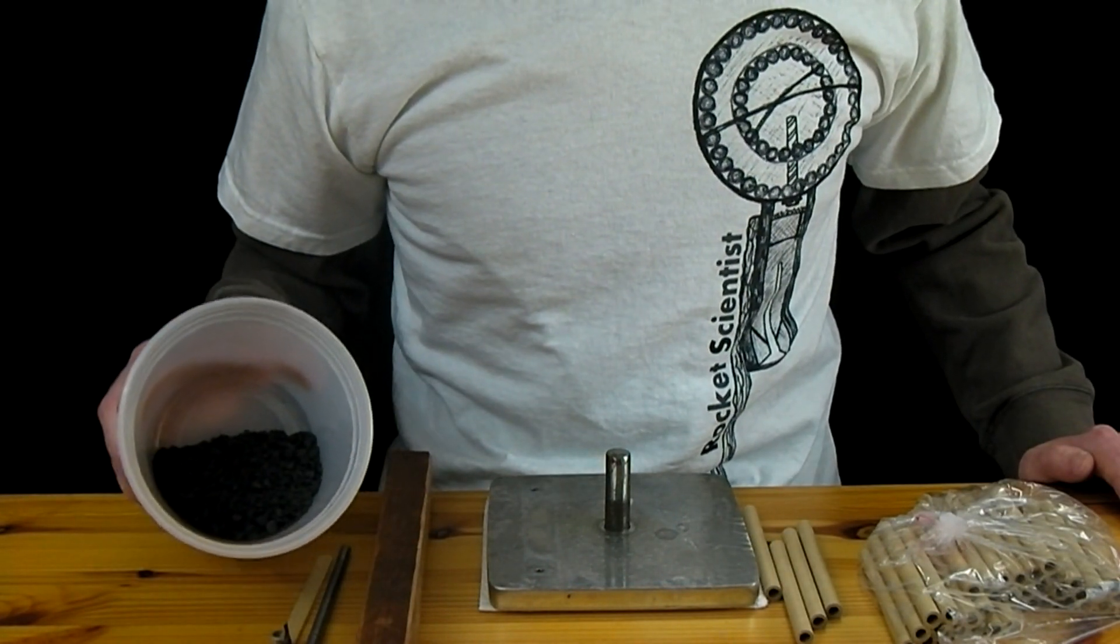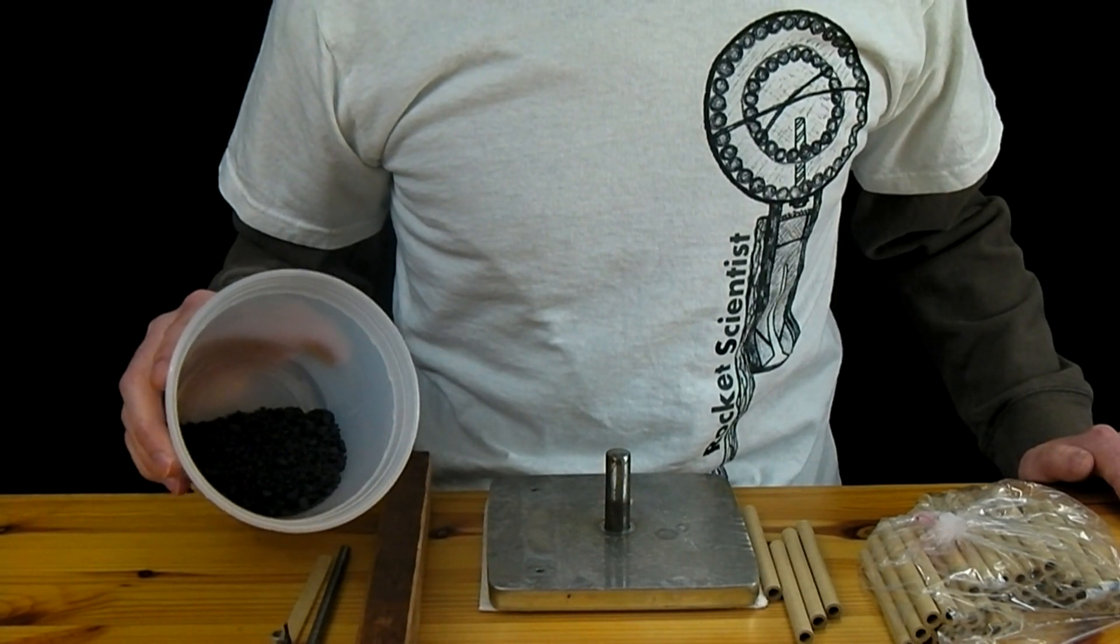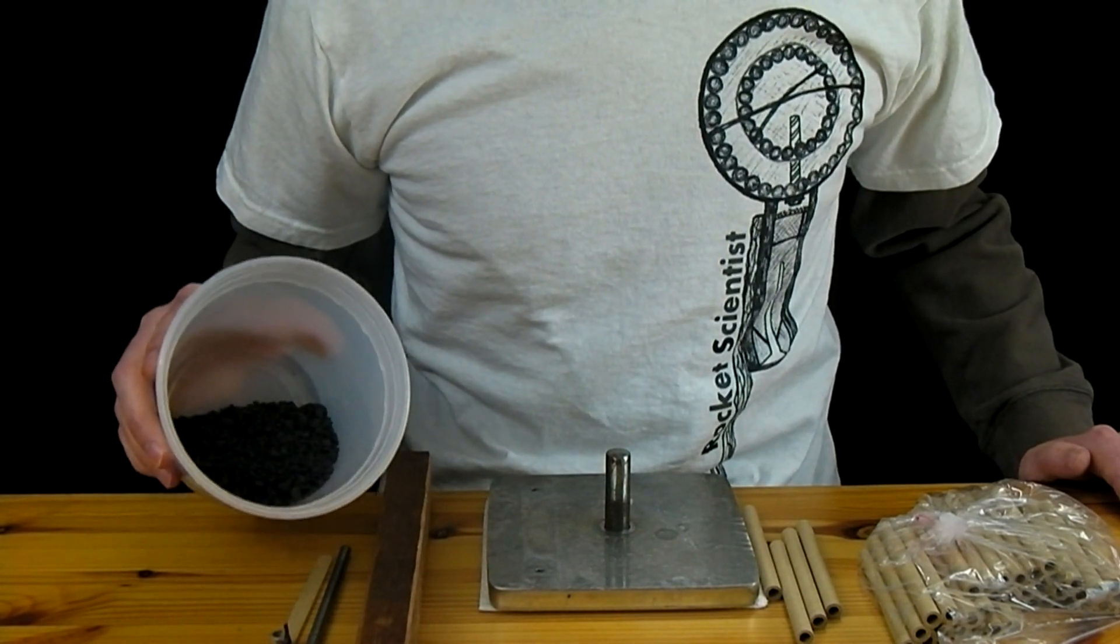This is granulated black powder but it could easily be in meal form. The benefit to using granulated powder is it pours more easily into the tube and does not kick up dust.